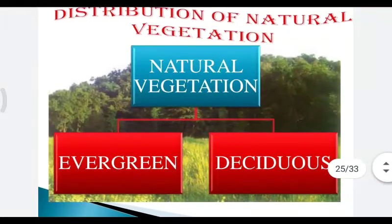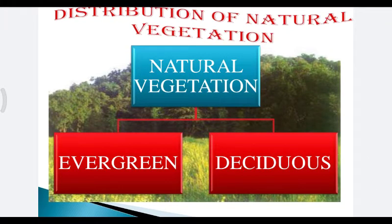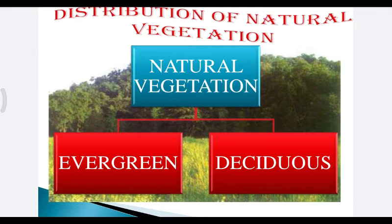In dry areas, thorny shrubs grow in low rainfall areas. In areas of heavy rainfall, huge trees are found. Dense forests are thus associated with the areas having abundant water supply.